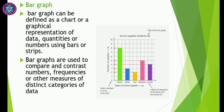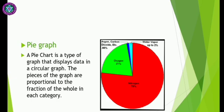The bars can be drawn vertically or horizontally. Bar graphs are usually used in geography to compare different quantities — things in contrast, numbers, frequencies, or other measures of distinct categories of data. As you can see in the school supplies example, the green color shows that pencils are the most used item among school students.